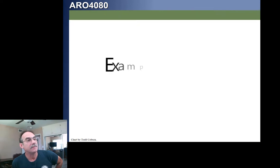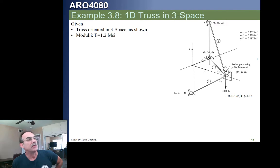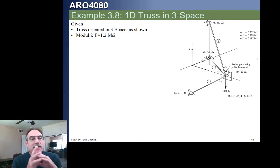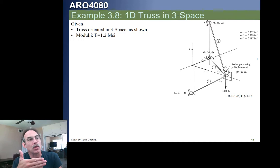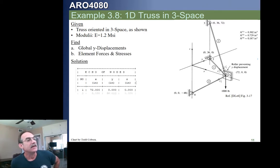Let's look at example 3.8 from our text, figure 3-17. We have four nodes and three elements; three of the nodes are pinned and one has a roller support that cannot move in the Y direction. We remove the X, Y, and Z equations for nodes two, three, and four, and the Y equation for node one. This leaves two degrees of freedom — a U and a W displacement at node one. We look at all node locations, our element table showing element one from node one to two, element two from one to three, and so on, with area and E values.